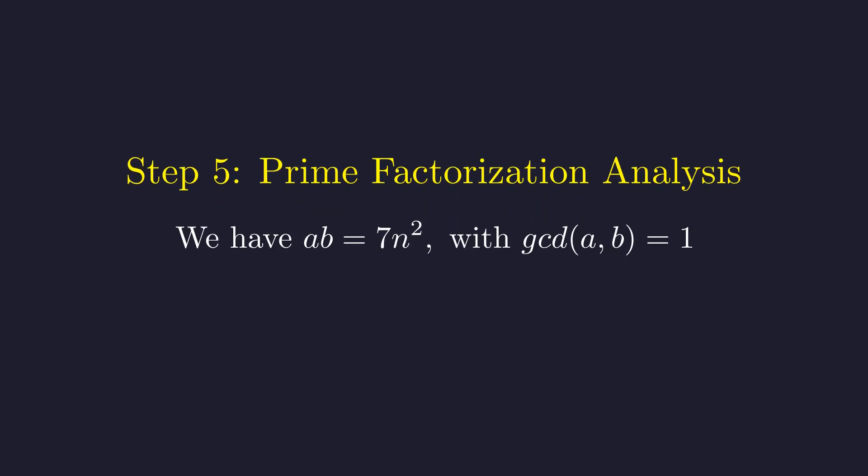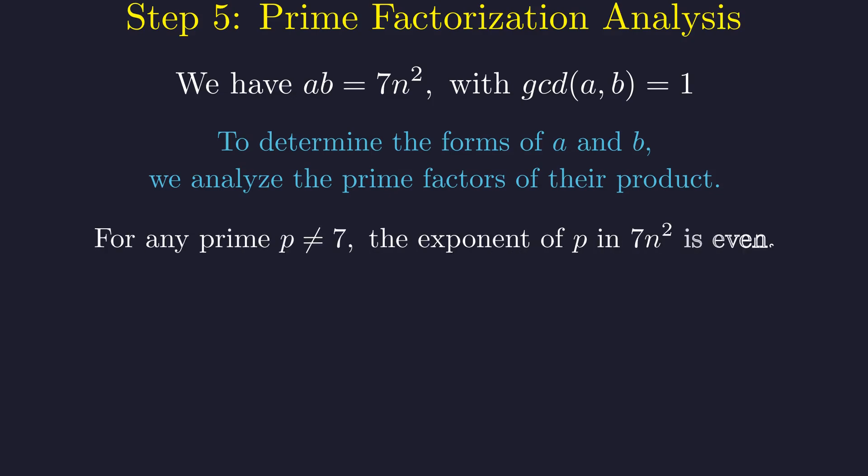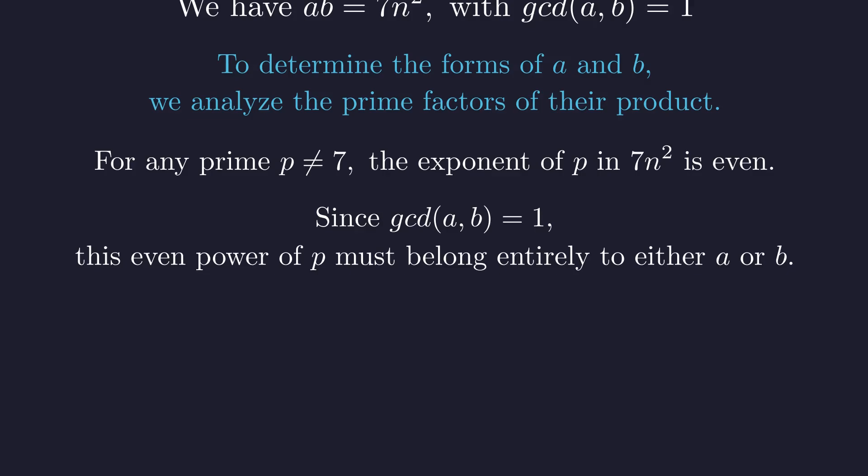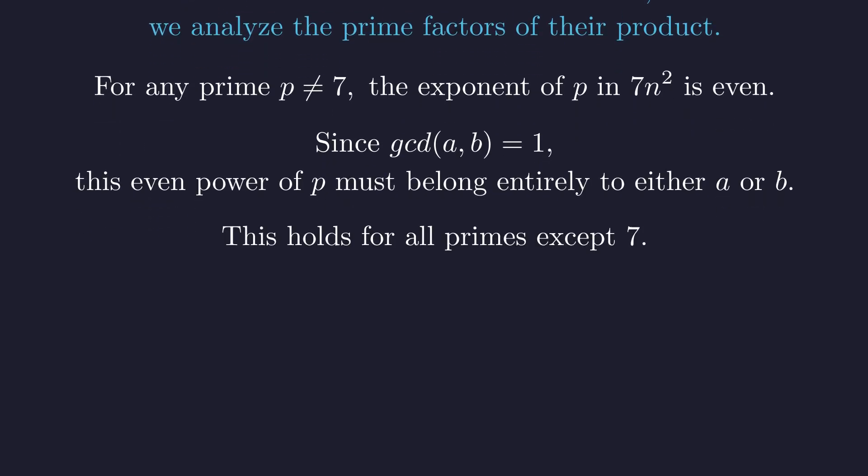The coprimality of a and b allows us to determine their structure by analyzing the prime factors of the right-hand side. We have two coprime factors whose product is 7 times n². Consider any prime number p that is not 7. In the term 7n², the exponent of p must be even. Because a and b are coprime, they share no prime factors. Thus, this entire even power of p must belong either to a or to b. This holds for all primes except 7. Therefore, the prime factorization of both a and b must consist of even exponents, except for the prime 7.